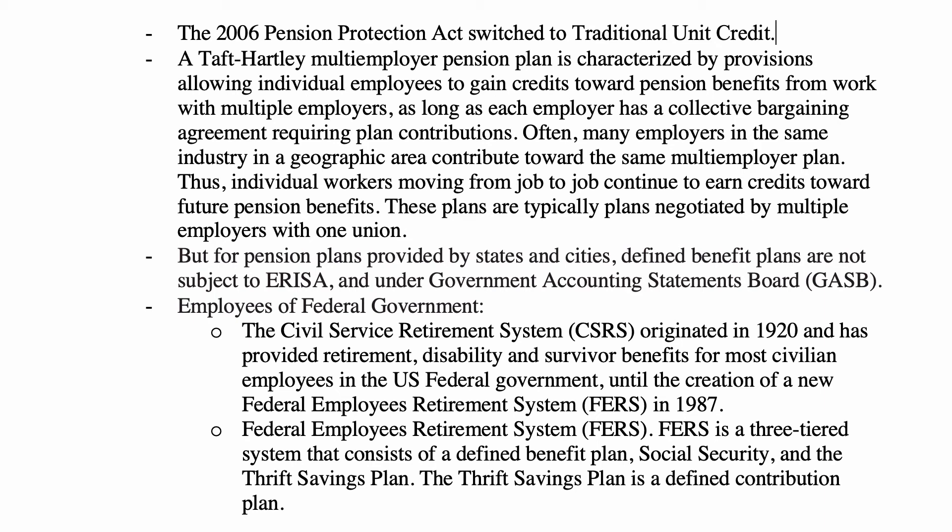Federal government employees have the Civil Service Retirement System, which originated in 1920 and provided retirement, disability, and survivor benefits for most civilian federal employees until the creation of the Federal Employees Retirement System in 1987. The Federal Employees Retirement System is a three-tiered system consisting of a defined benefit plan, Social Security, and a Thrift Savings Plan, which is a defined contribution plan.